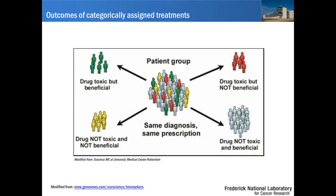One of the first biomarkers discovered is Herceptin in breast cancer — breast cancer is most probably ten years ahead of all other cancers in this regard. Immunohistochemistry is done to see if the patient's tumor expresses HER2, and then Herceptin can be applied. If the tumor is not HER2-positive, the treatment is obsolete, and the patient should not be exposed to an unnecessary and expensive treatment.